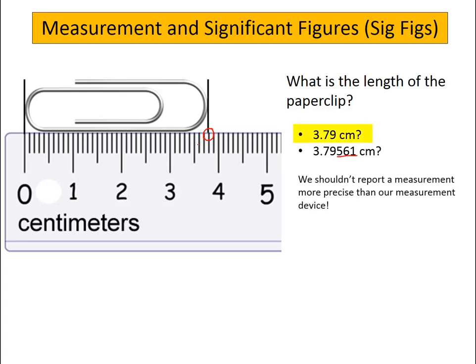And indeed, that's what we should do. We should report a measurement that is consistent with the precision of our measurement device. The second option here is way more precise than we could actually measure with our simple ruler here.